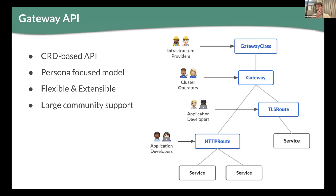Entering Gateway API — before doing a brief overview, I want to lay down a few facts. Gateway API is a CRD-based API developed out of tree, outside of Kubernetes, which allows the community to have faster development and a shorter feedback loop. Gateway API is a persona-focused model, where different personas have different responsibilities. It is flexible and extensible, and it has large community support — we now have more than 200 active contributors.